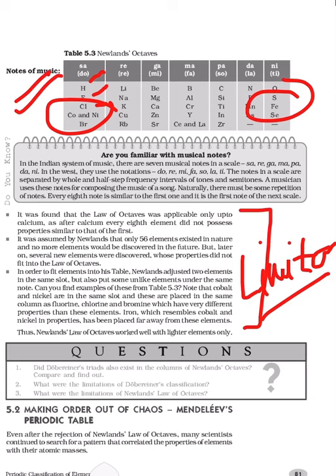are placed there. Their properties are similar but they are placed far away from each other. These were all the limitations of Newland's Law of Octaves: it was applicable only up to calcium (lighter elements), and after that it was not applicable.